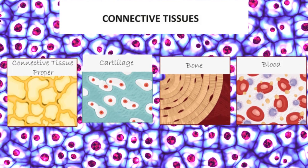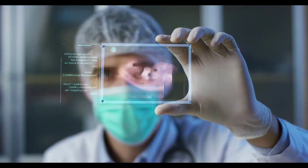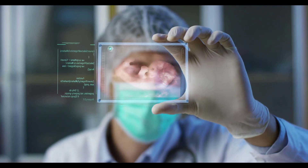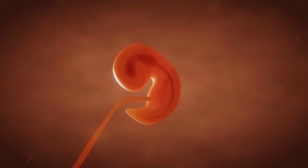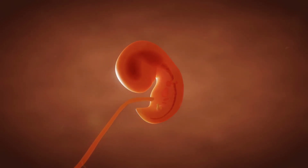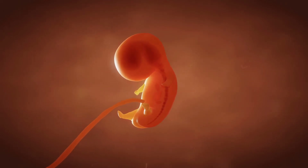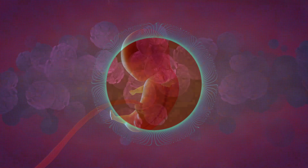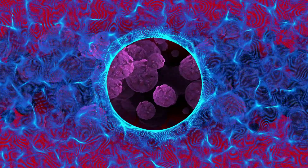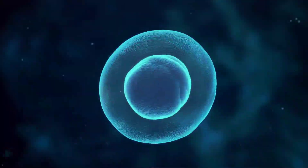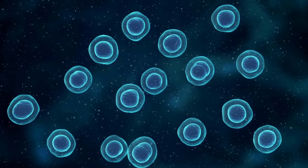It may be hard to believe that these very different tissue types are actually related, but it is true. The cells that make up the different connective tissue types all have the same embryonic origin. During the early stages of development, the embryo forms three distinct layers: the ectoderm, which is the outer layer; the mesoderm, which is the middle layer; and the endoderm, which is the inner layer. The cells of the mesoderm have mesenchymal stem cells that can differentiate into many different types of cells. The mesenchymal stem cells give rise to the different cell types needed to form all of the different types of connective tissue.